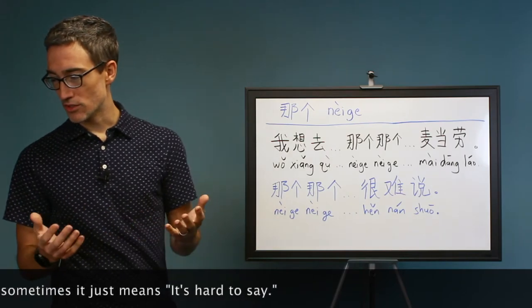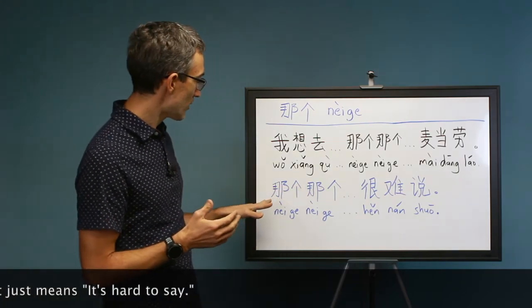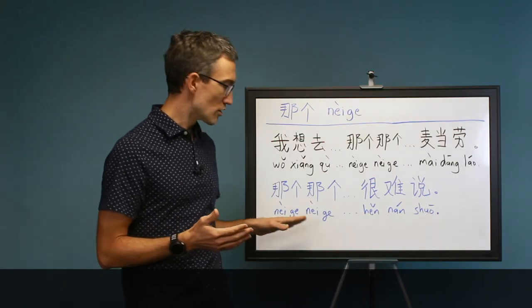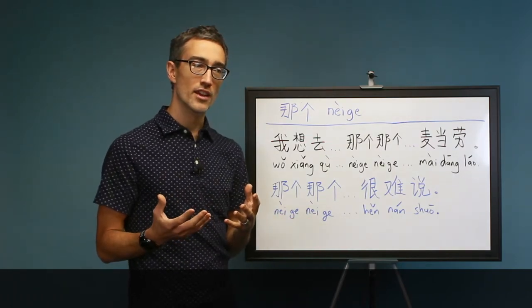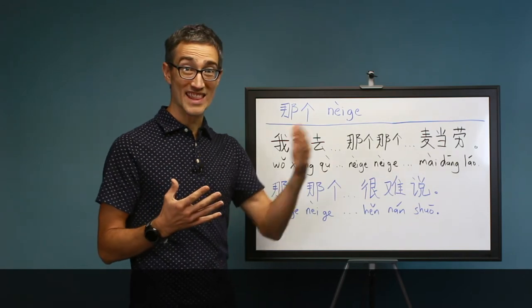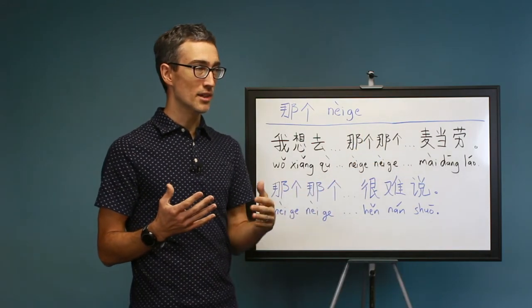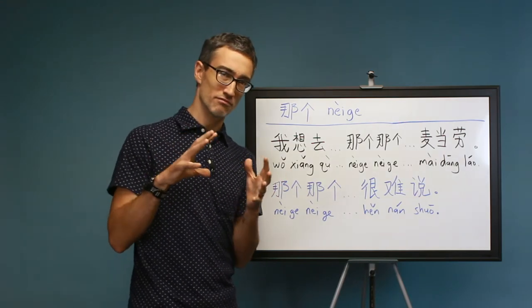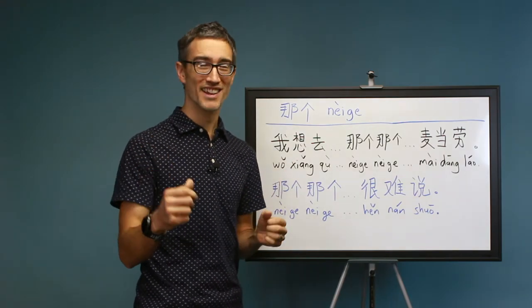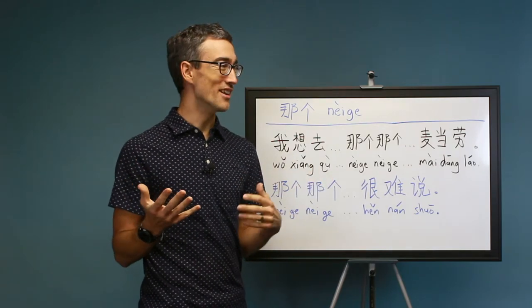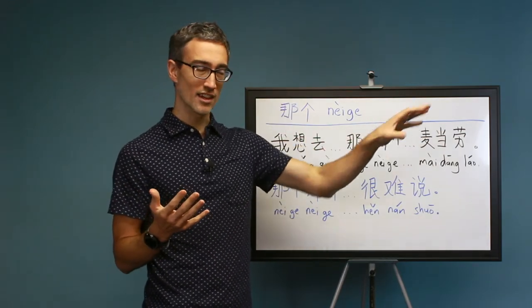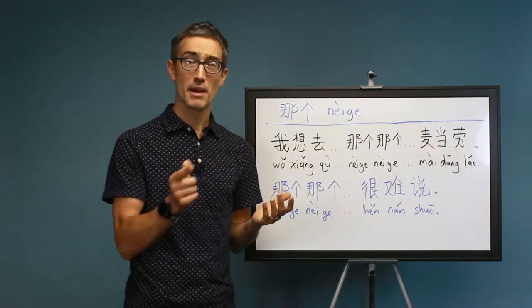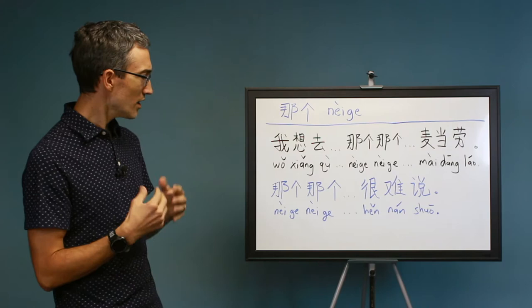And those are some examples of how it's used. I also want to point out that the pronunciation of nega is often a little weaker. The fourth tone here is often a little weaker than when you're saying that or that one, because you know how when you say um, it's sort of not quite as forceful. So nega dong shi is that thing, but when you're doing this, it'd be like wo xiang qu, nega nega, mai dang lao.